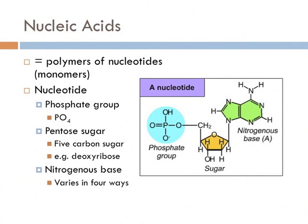And three, a nitrogenous base. There are four different types of nitrogenous bases in DNA, and this is where the code is stored. The arrangement of these bases determines the physical characteristics. You might know these bases by their letters: A, C, T, and G.